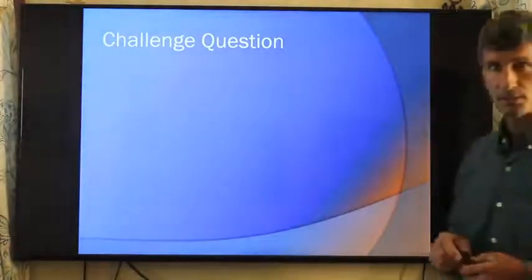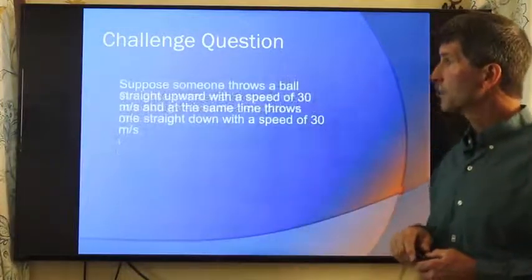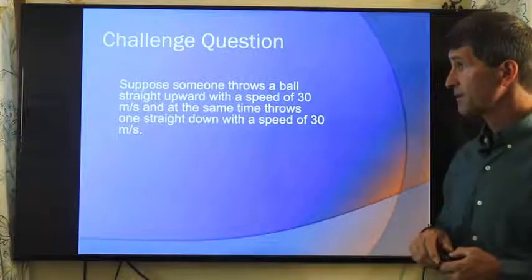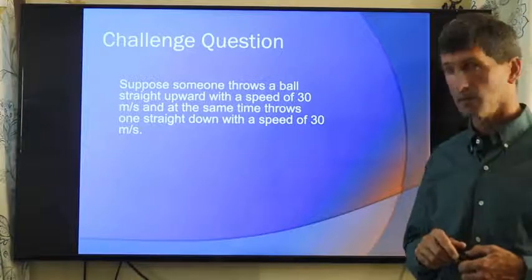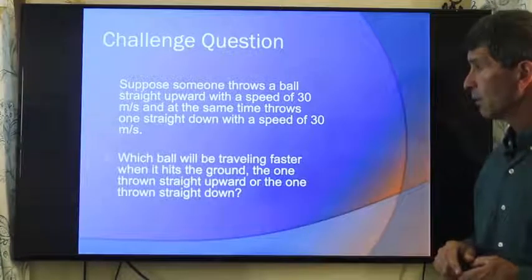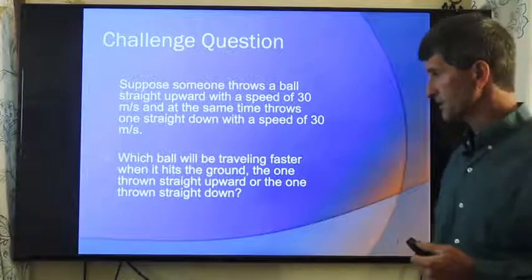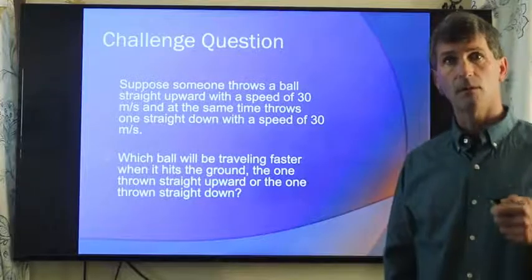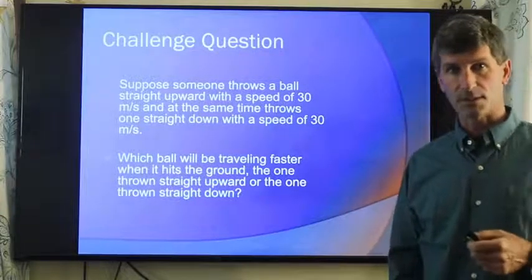Here's something that's interesting. Suppose someone throws a ball straight up with a speed of 30 meters per second. At the same time, another person throws one down with a speed of 30 meters per second. The question is, which ball will be traveling faster when it hits the ground? The one thrown straight up, or the one thrown straight down? Ignore air resistance for this case.